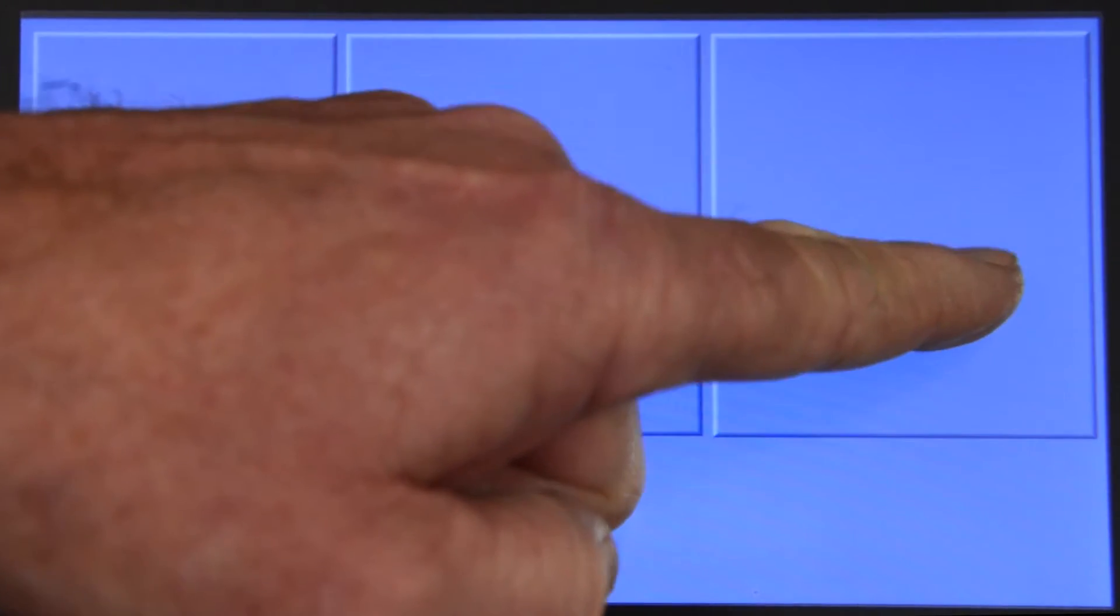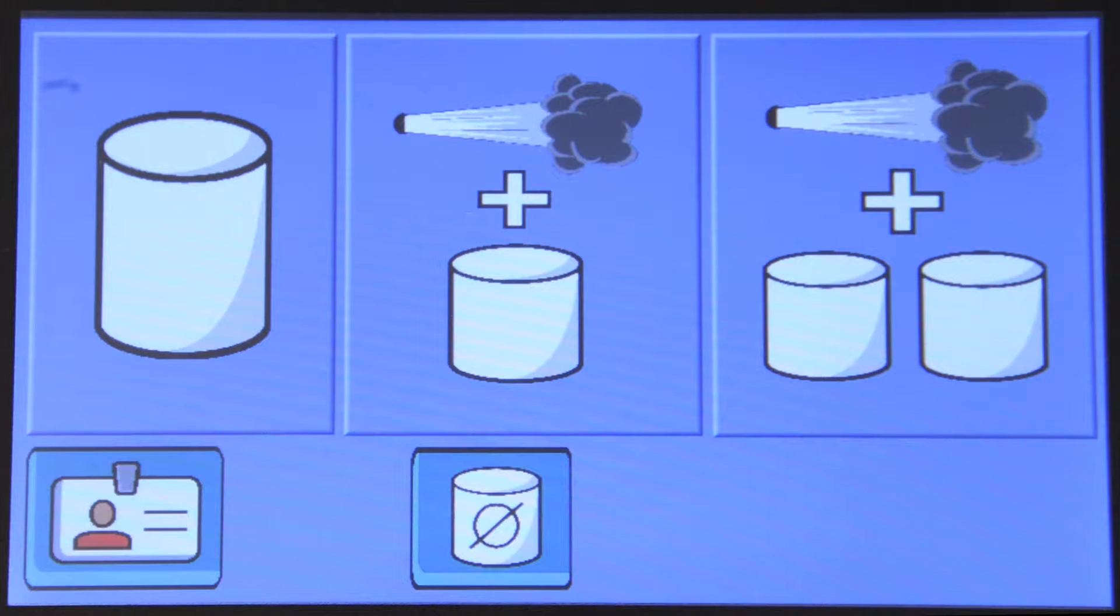Now select the correct projectile size for your cleaning application. Three cleaning modes are now displayed. The normal cleaning mode is recommended for most hose and tube cleaning applications and the graphic is a single projectile.